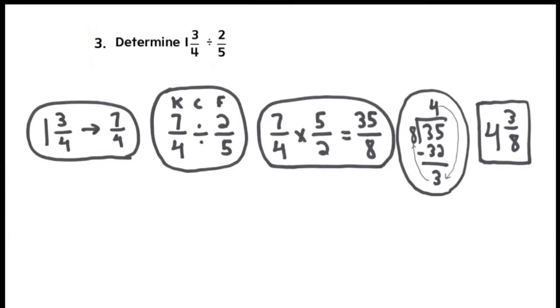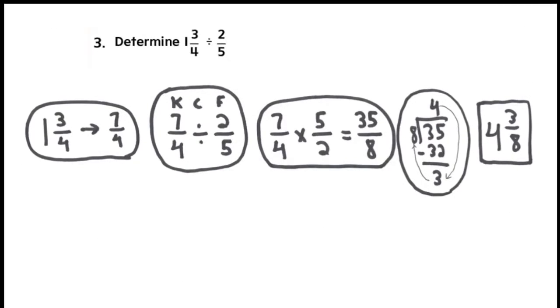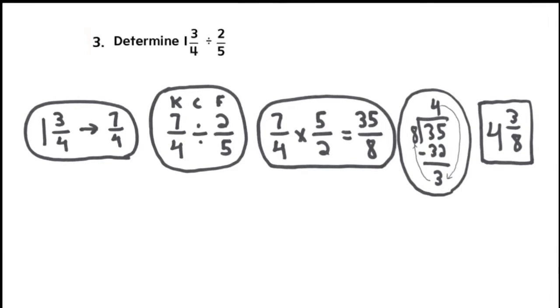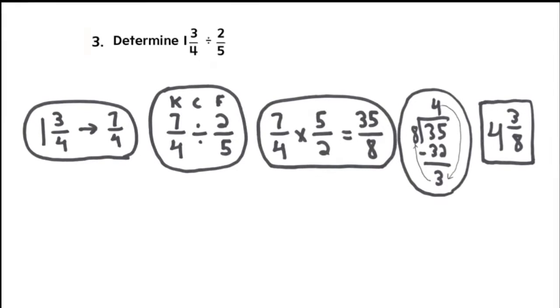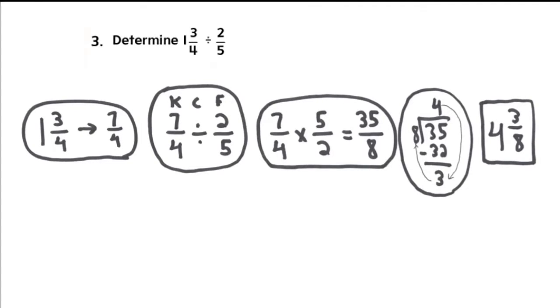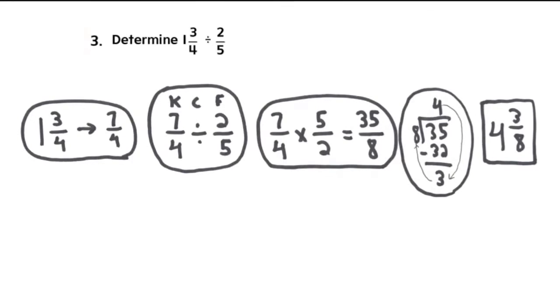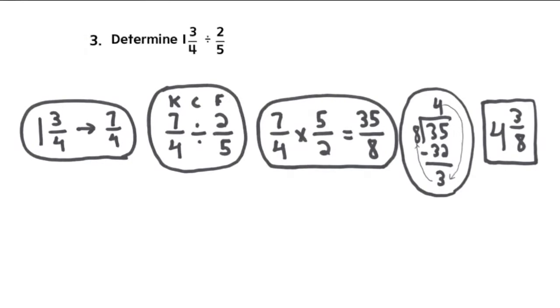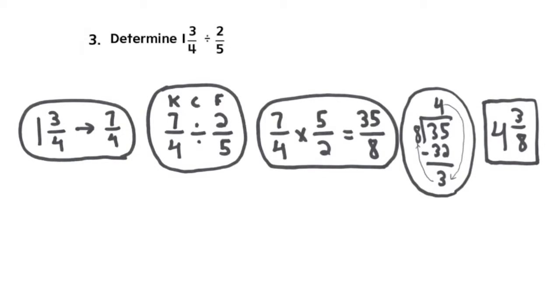In example 3, the first thing you should do is turn your mixed number into an improper fraction. Once you've done that, be sure to rewrite the problem, which has now become 7 fourths divided by 2 fifths. Remember though, you have to use keep, change, flip when you're dividing fractions.